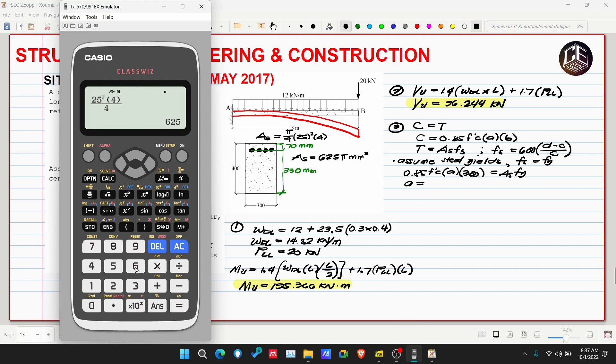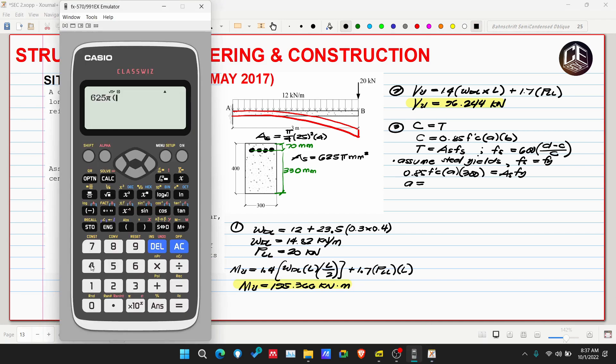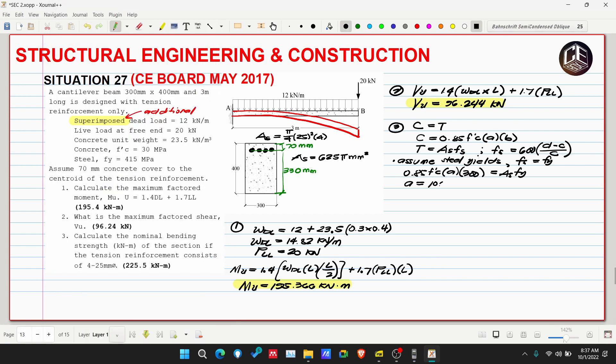Our As is 625 pi, our Fy is 415, then 0.85 multiplied by F'c which is 30, multiplied by 300. So A equals 106.516 millimeters.